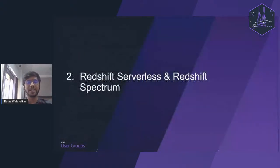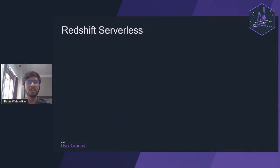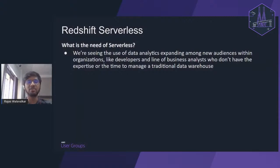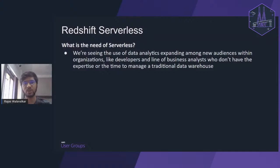Now let's get into Redshift Serverless and Redshift Spectrum. Redshift Serverless is one of the most important and newest features Amazon has recently published. It's basically a serverless version of Redshift. In the traditional Redshift architecture, you have leader nodes and compute nodes — you create the cluster, configure memory and CPUs, and deploy it. But in serverless, you do not have to select CPU, memory, or storage requirements. Everything is handled by AWS in the backend.